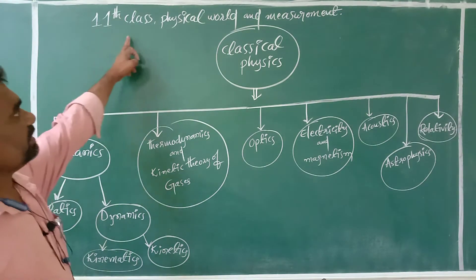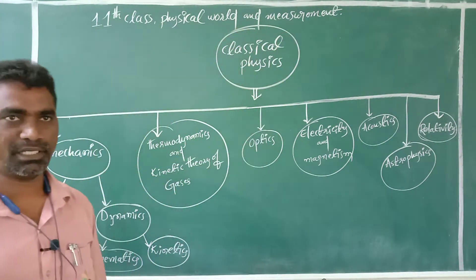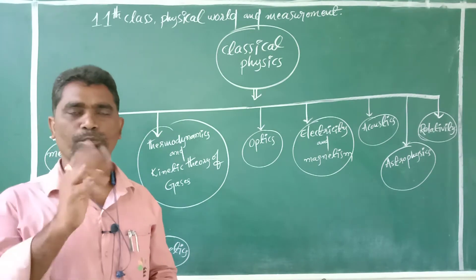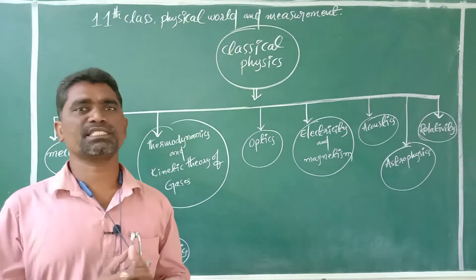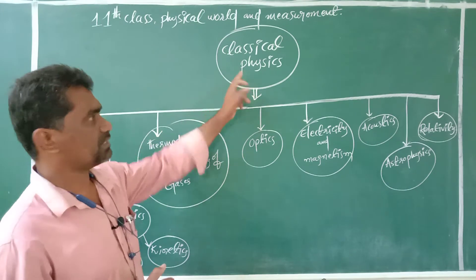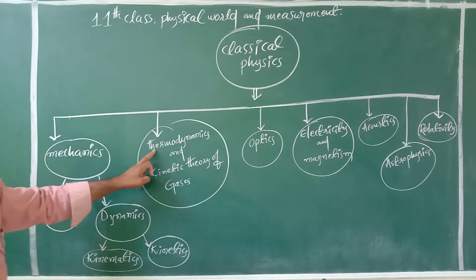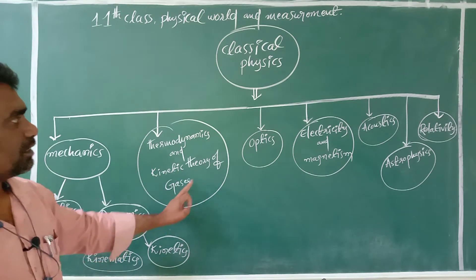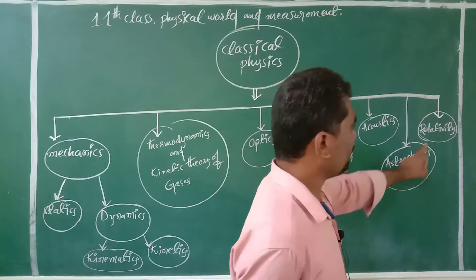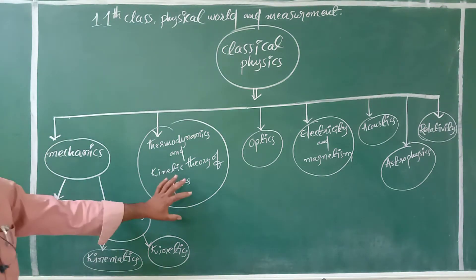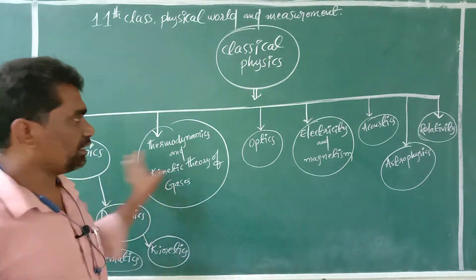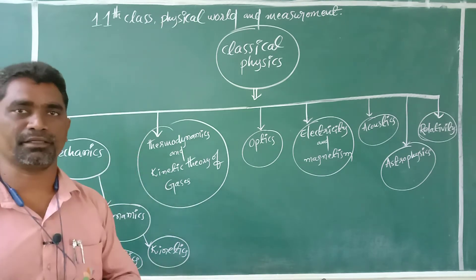Hi students, 11th class physical world and measurement. Here we already discussed physics. In physics, two branches are there: one is classical physics, another one is modern physics. Under classical physics: mechanics, thermodynamics and the kinetic theory of gases, optics, electricity and magnetism, acoustics, astrophysics, and relativity. These topics come under classical physics, and were discovered before the year 1900.